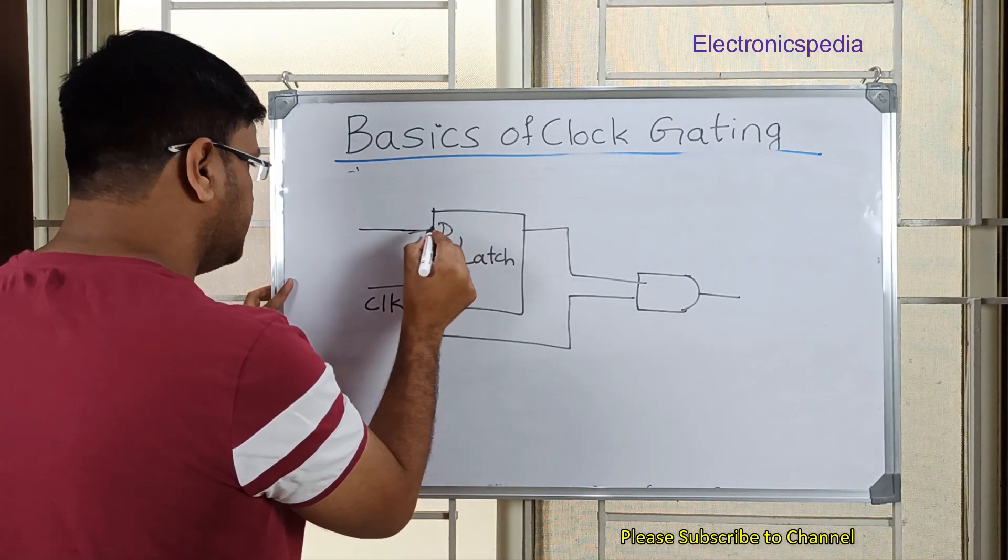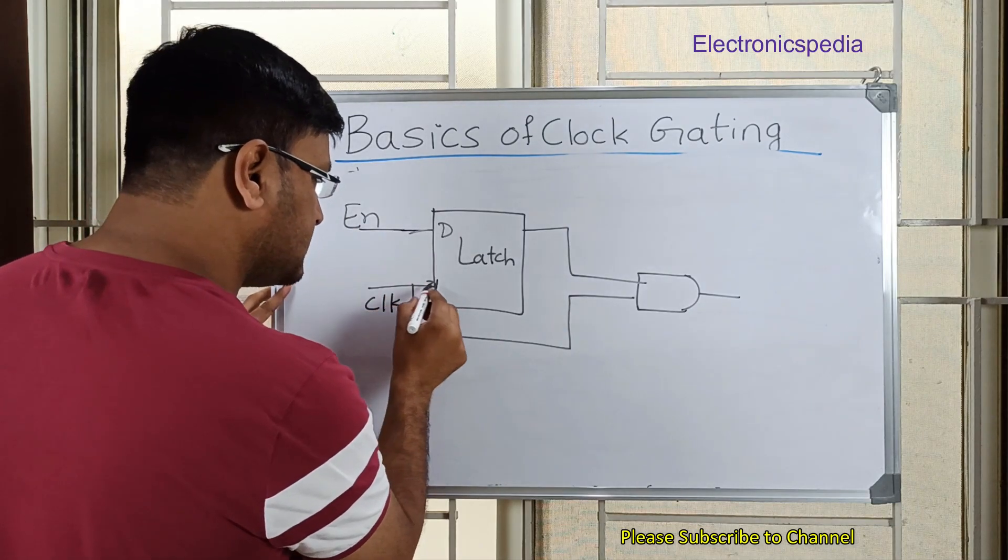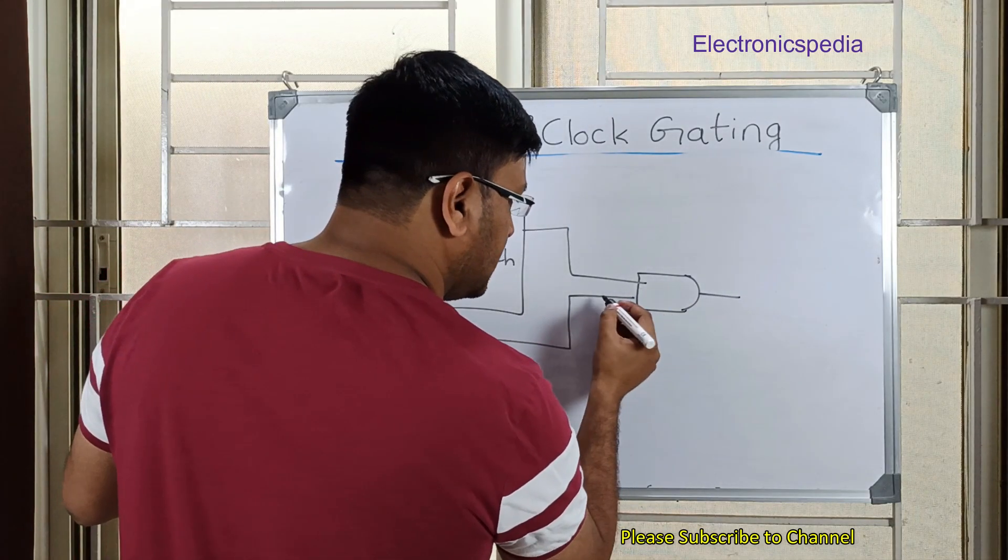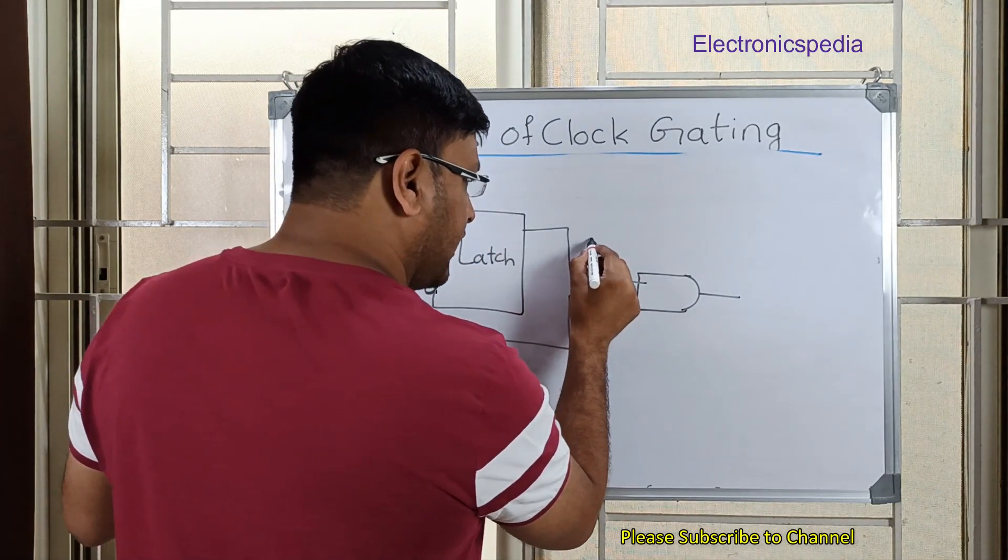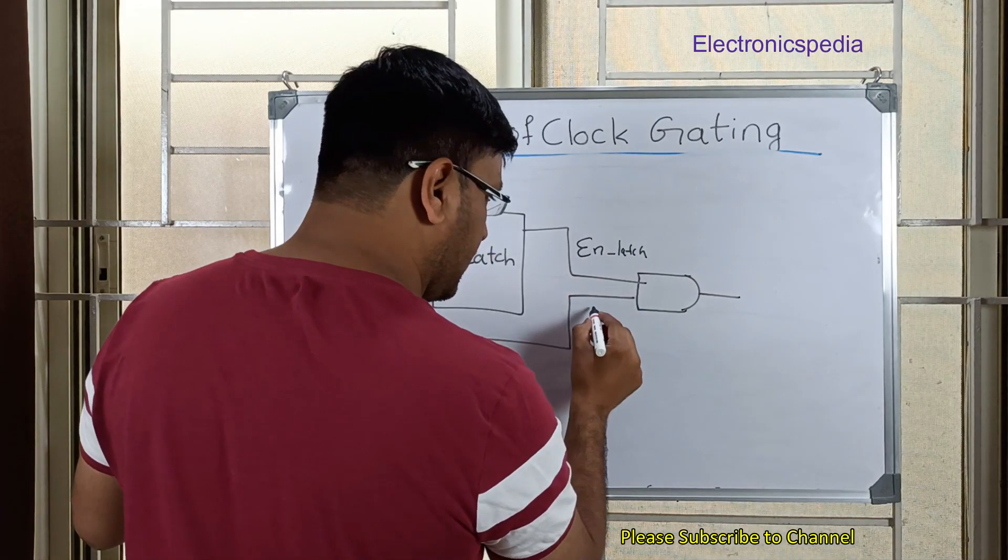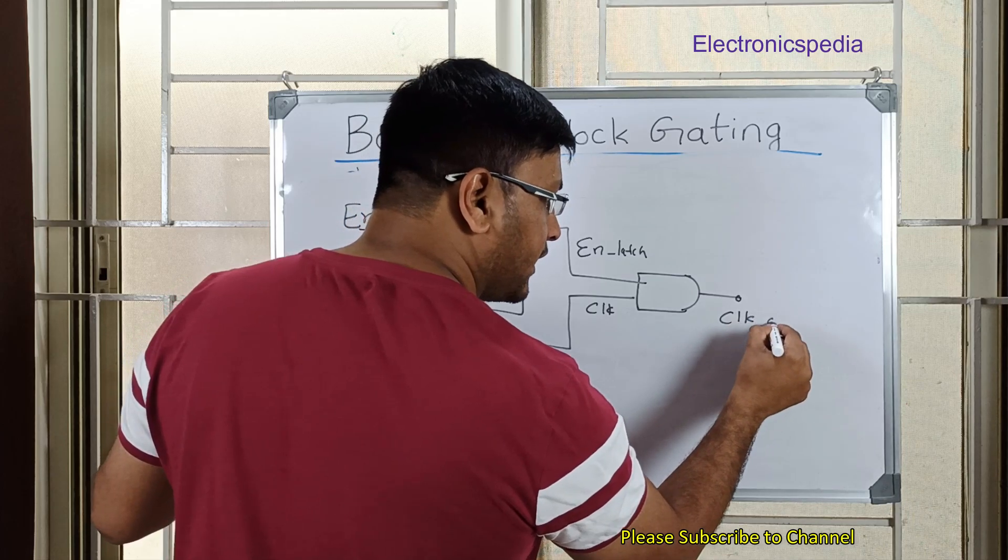You can consider this as a D latch. Now this is my enable signal, and this is the clock. Here the clock will be inverted, and this is the enable which is a latch output, and this is my clock which is inverted, and this is my clock gated output.